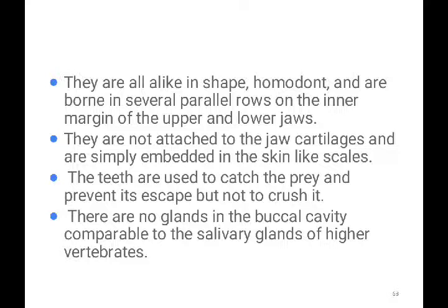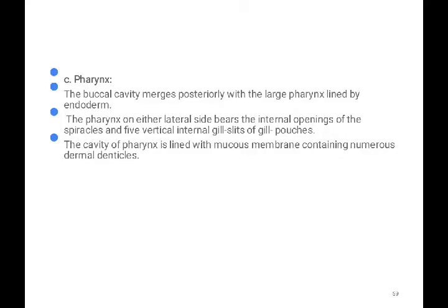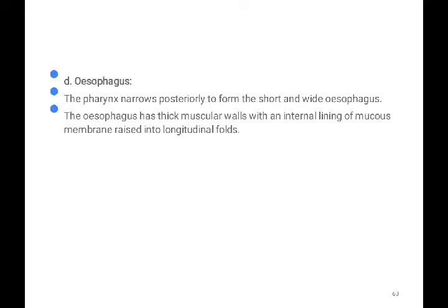The buccal cavity merges posteriorly with the large pharynx, which is lined by endoderm. On either lateral side, the pharynx bears the internal opening of the spiracles and five vertical internal gill slits or gill pouches. The cavity of the pharynx is lined with mucous membrane containing numerous dermal denticles.